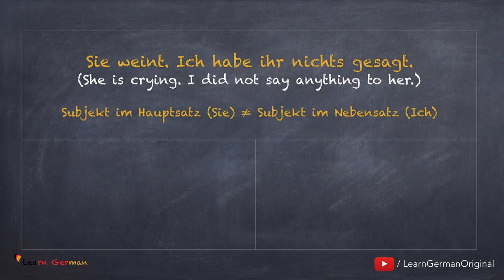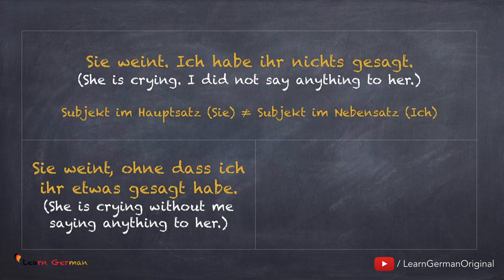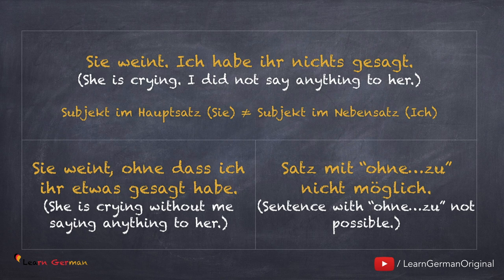Let's look at another example. Sie weint. Man kann sehen, dass das Subjekt im Hauptsatz und das Subjekt im Nebensatz nicht gleich sind. In dem Hauptsatz ist es sie und in dem Nebensatz ist es ich. In so einem Fall kann man nur einen Satz mit ohne dass formulieren und nicht mit ohne zu: Sie weint, ohne dass ich ihr etwas gesagt habe. Ein Satz mit ohne zu ist leider nicht möglich. So when the subject in both sentences is not the same, you can only make sentences with ohne dass and not with ohne zu.